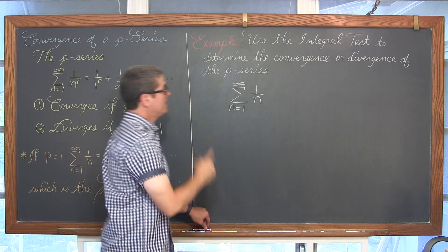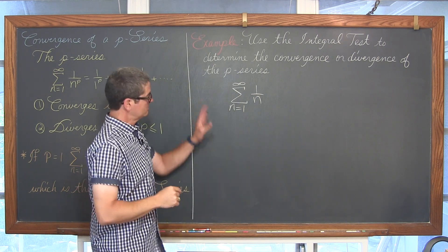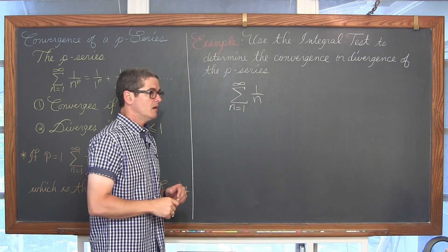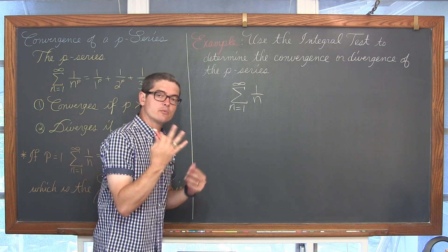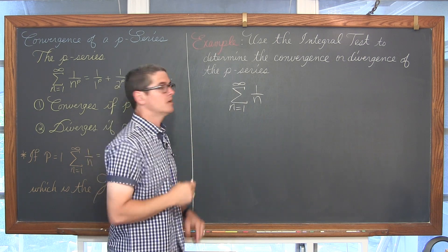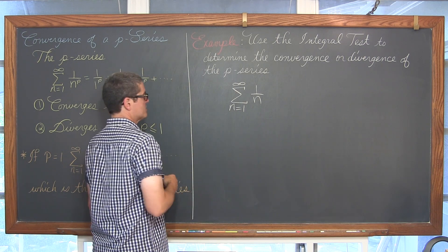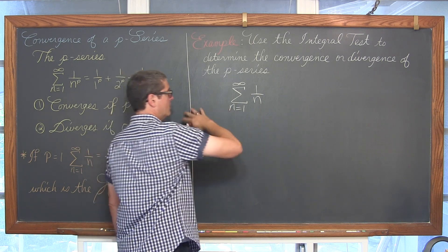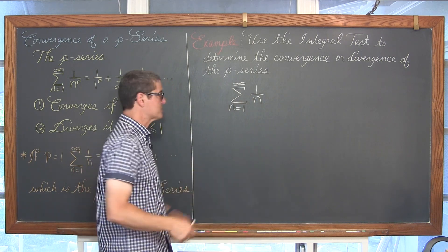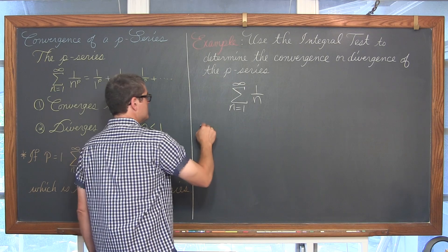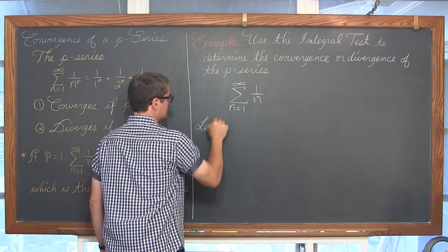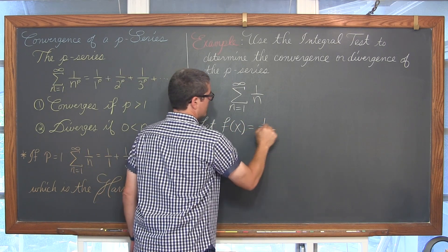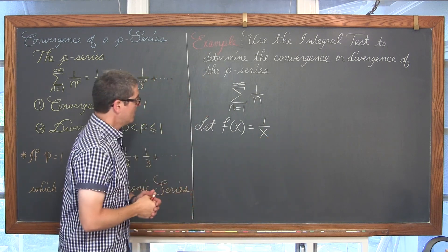If we are going to use the integral test to test whether or not the series converges or diverges, we need to make sure we meet the three requirements of the integral test. First, we need a continuous function. So we let f of x equal 1 over x.